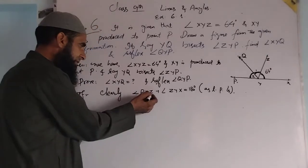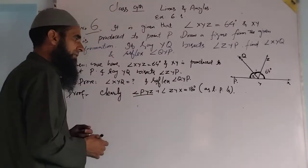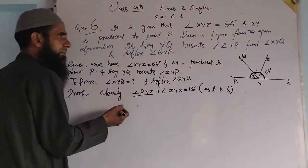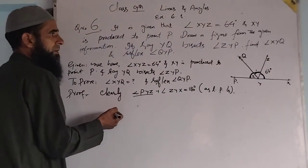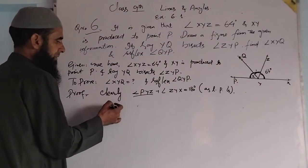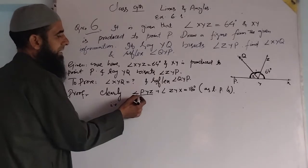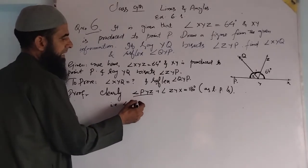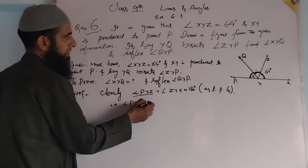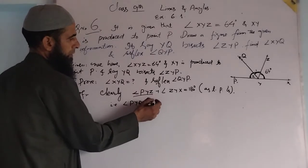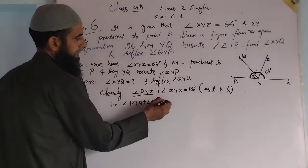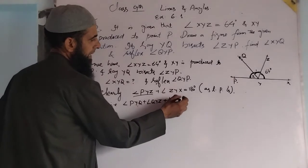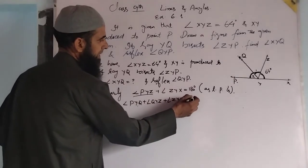Now we split angle PYZ into two angles. We write: angle PYQ plus angle QYZ plus angle ZYX equals 180 degrees.